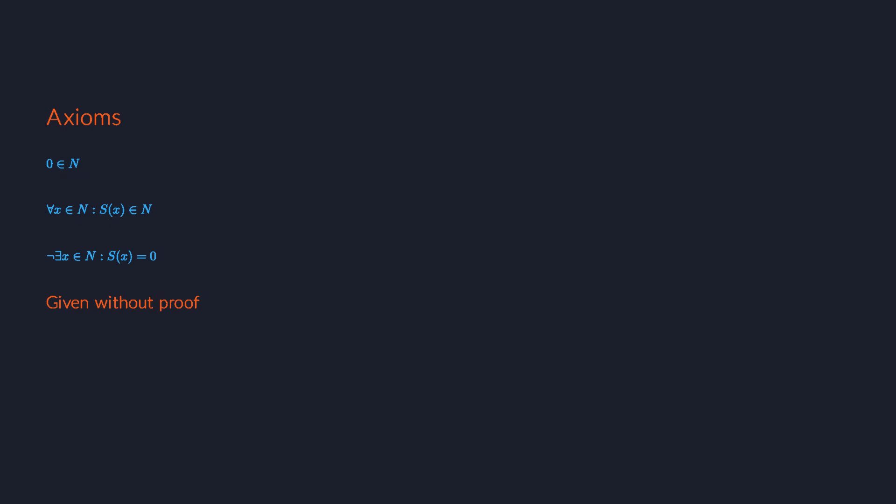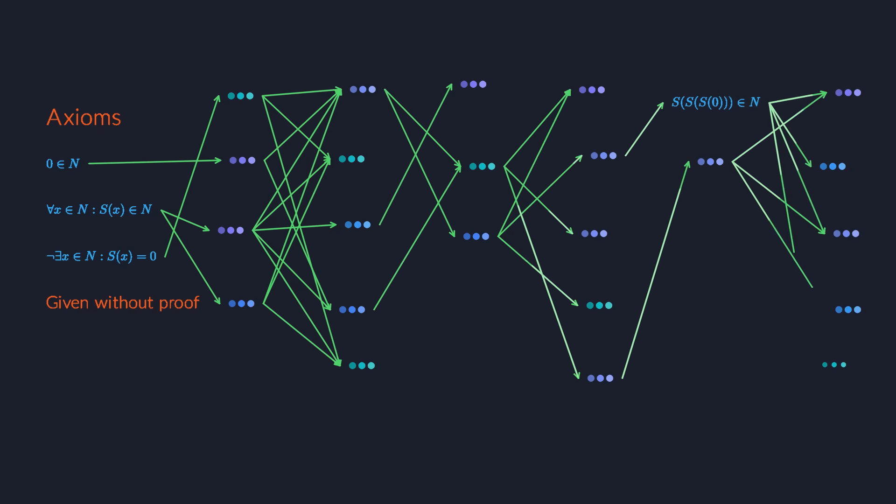Using the axioms as your starting point, you then apply inference rules to infer new facts about the world. This is what a mathematical proof looks like. It follows logical rules from the given facts to the new facts that you want to prove.